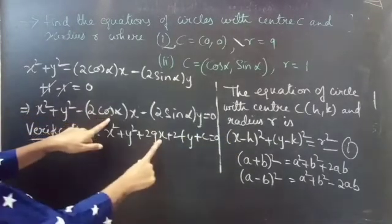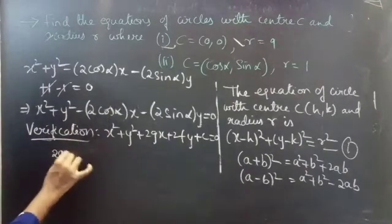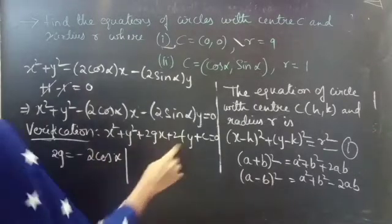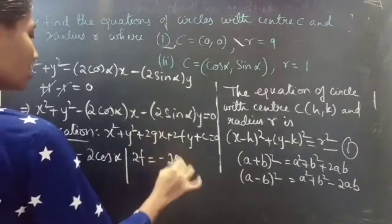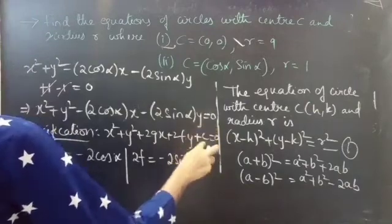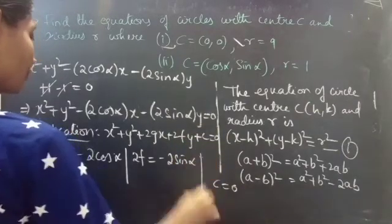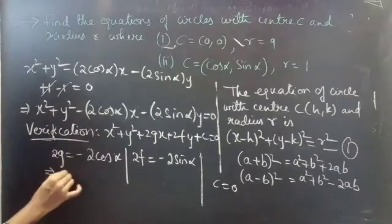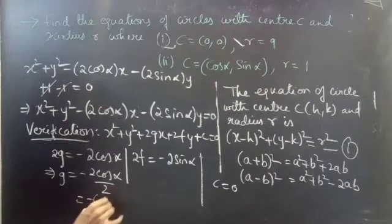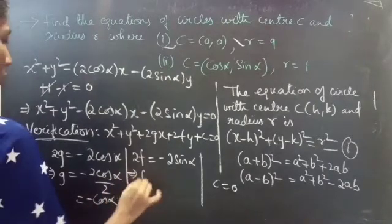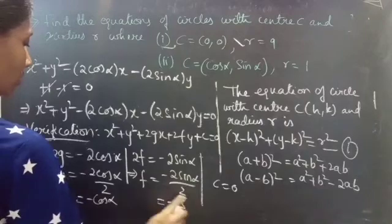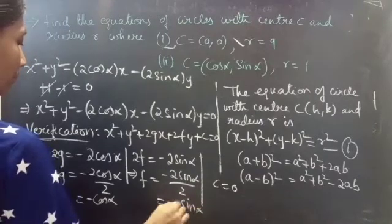Equating the coefficient of X: 2G = −2 cos α. Equating the coefficient of Y: 2F = −2 sin α. Equating constants: C = 0. From these, G = −cos α and F = −sin α.